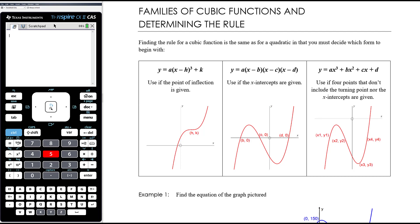If it's going to be a cubic of this shape, the equation is going to be of that turning point form — that would be the starting point. It's going to be part of that family of cubics. If you know the turning point you can immediately put in h and k, and then you can use another point to substitute in to find the value of a.